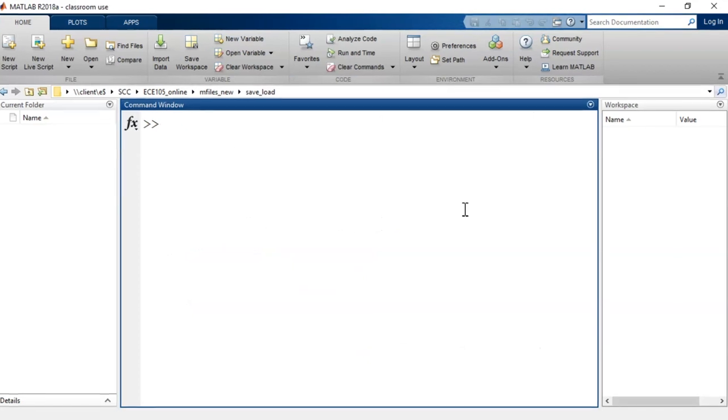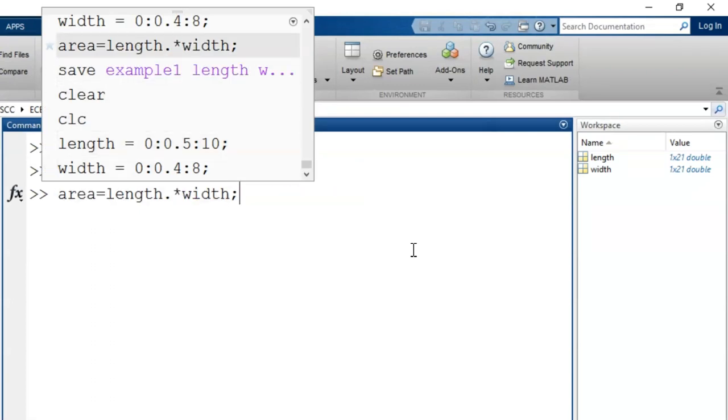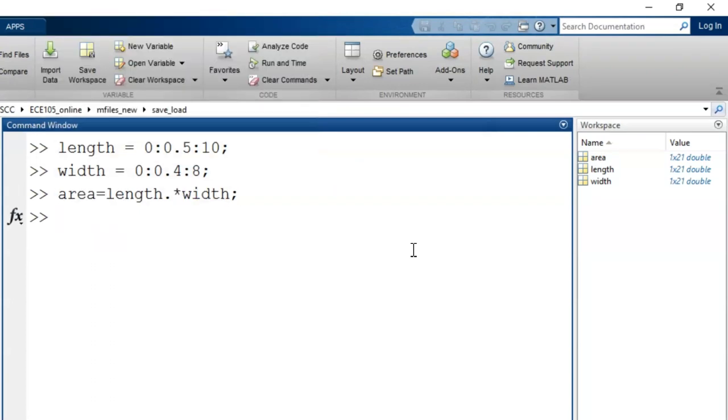Let's look at the same example within MATLAB. First I generate the three vectors length, width, and area. Note that each one appears in the workspace. Remember that this is the temporary memory. The variables are holding information now, but that would be lost if we type the clear command or close MATLAB.